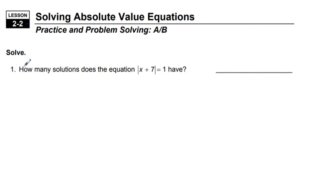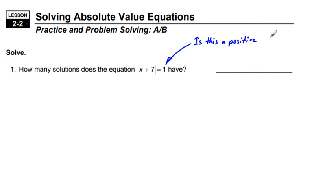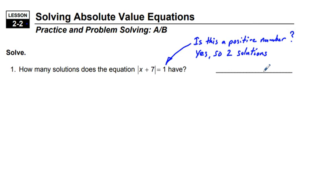First problem to solve: how many solutions does the equation absolute value of quantity x plus 7 equals 1 have? The first thing we're going to do is look at the number on the right side. On the left we have an absolute value expression; on the right we have 1. We ask ourselves: is this a positive number? Yes. So we have 2 solutions.